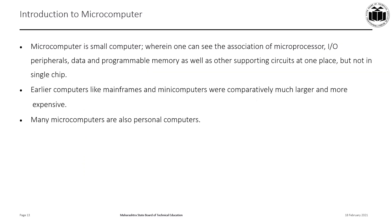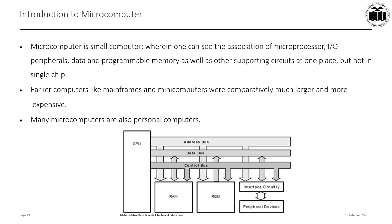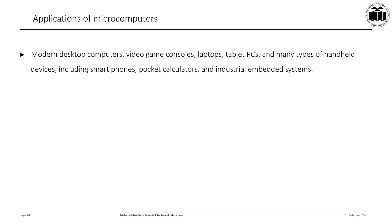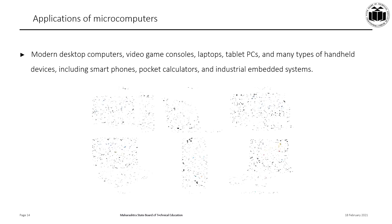A microcomputer is a small computer wherein the microprocessor, I/O devices, data and programmable memory, and other supporting circuits are all on a single chip. Earlier computers like mainframes and minicomputers were much larger in size and more expensive. Modern microcomputers like personal computers are smaller and more efficient. The block diagram shows the CPU, RAM, ROM, interfacing circuitries, and peripheral devices connected via the address bus, data bus, and control bus. Applications include desktop computers, laptops, and tablet PCs.